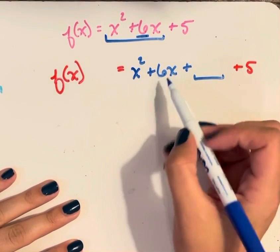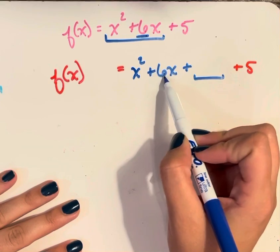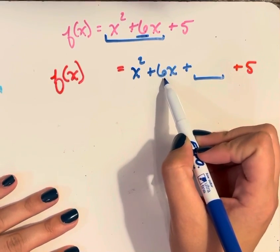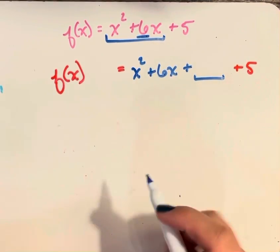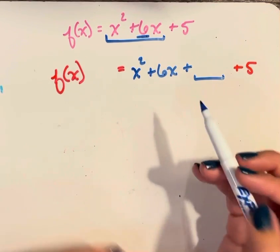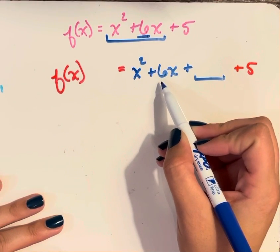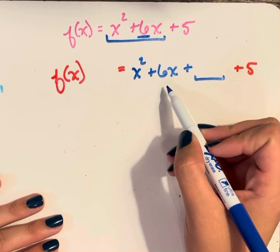So the number I put here is going to come from the 6 here, the coefficient of x to the first. So we talked about the magic number in class. The magic number is 6 divided by 2. 6 divided by 2 we know is 3.